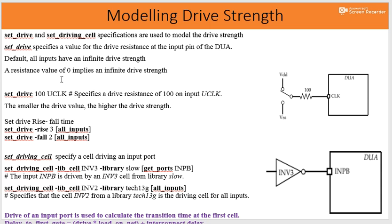When drive strength is infinity, resistance equals 1 over infinity, which equals 0. Since time delay is the product of R times C, the delay will be almost 0 — that is the ideal case. For a more practical model, suppose we want to model a wire resistance of 100 ohms. In the script we write: set_drive 100 clk, where 100 represents the total resistance offered by the wiring.